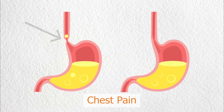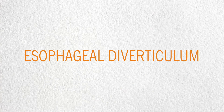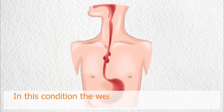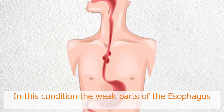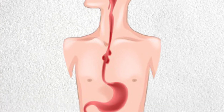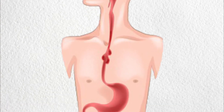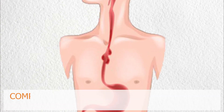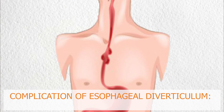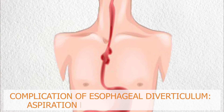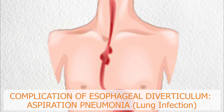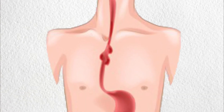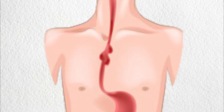Esophageal Diverticulum — in this condition, the weak parts of the esophagus pouch outwards. If an esophageal diverticulum causes regurgitation, it can lead to aspiration pneumonia, which is a lung infection caused by inhaling things like food and saliva.